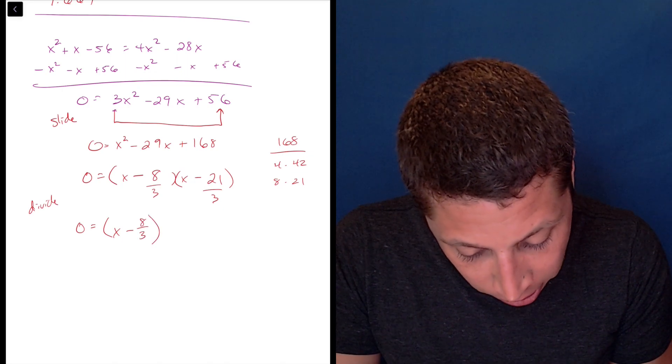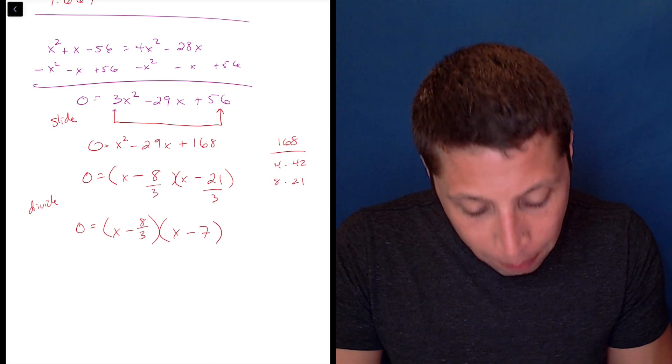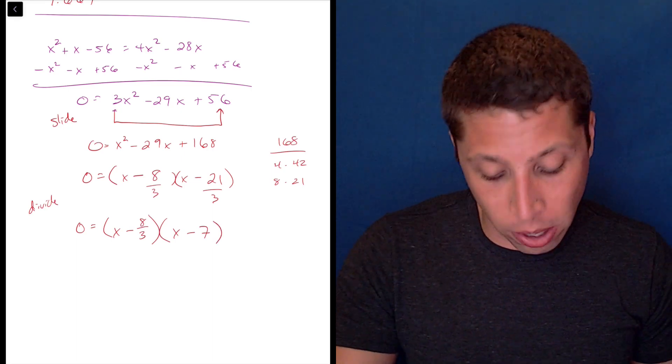This is x minus 8 thirds. I could move that 3 to the front, but I'm going to leave it there. But 21 divided by 3 can become x minus 7. And so there you go, that's kind of where this comes from.